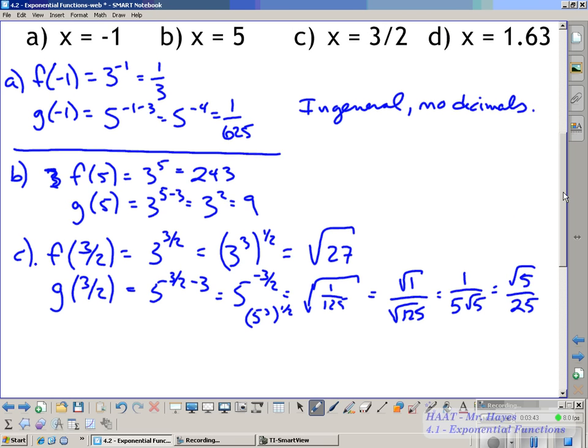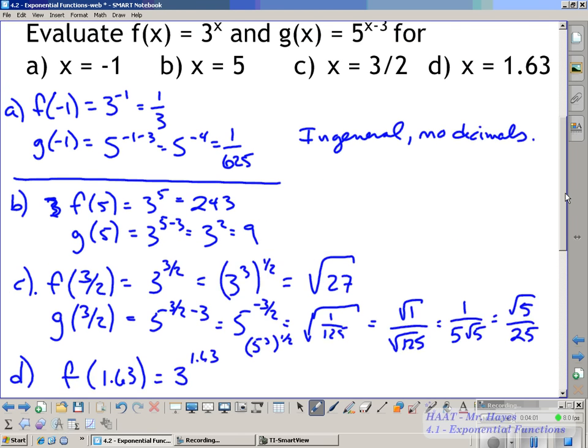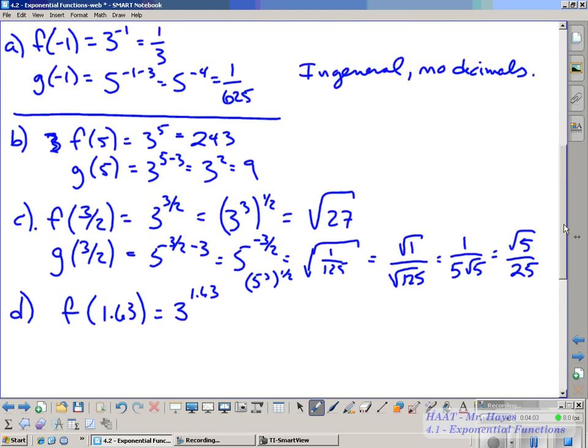So however you want to rationalize that, you can. So this is going to be the square root of 1 over the square root of 125. So that's going to be 1 over 5 root 5. So when I rationalize that, that's going to be root 5 over 25. And then for part D, D is 1.63. It should have been 5 squared, that's going to be 25.